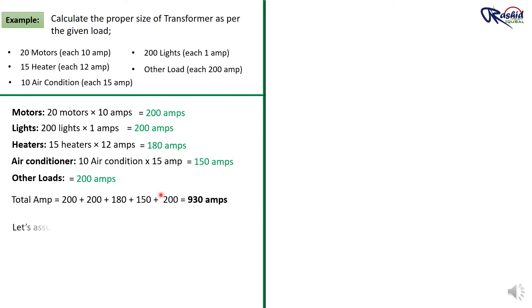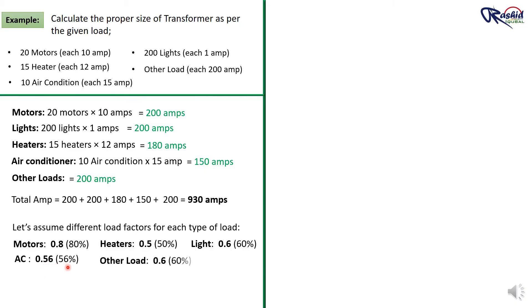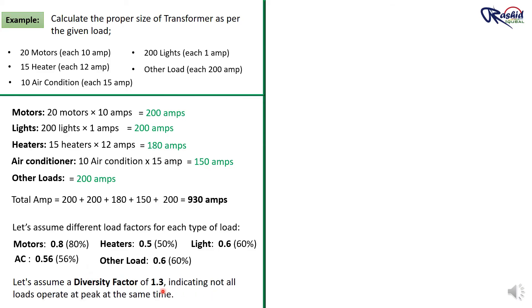Let's assume different load factors for each type of load: motors 0.8 (80%), heaters 0.5 (50%), lights 0.6 (60%), air conditioners 0.56, and other load 0.6. These are standard load factors which you can adjust as per your requirement. Let's also assume a diversity factor of 1.3.